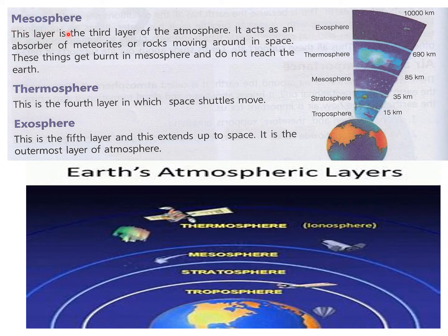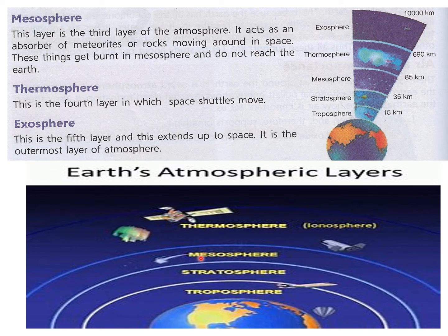The third layer is the mesosphere. It acts as an absorber of meteorites or rocks moving around in space — these meteoroids get burnt in the mesosphere and do not reach the earth. As meteoroids fall toward the earth and enter the mesosphere, there is a lot of air pressure and they start burning due to friction, burning up completely before they reach the earth's surface, so they do not harm the earth.